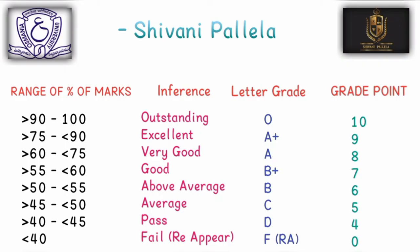The 20 internal marks are added by your college. So the total for each paper is 80 external marks plus 20 internal marks, making 100 marks in total. The grade and grade point are provided based on this combined total. If you have the internal marks, you will be able to calculate 100% of the grade marks, and then only you will get the percentage.